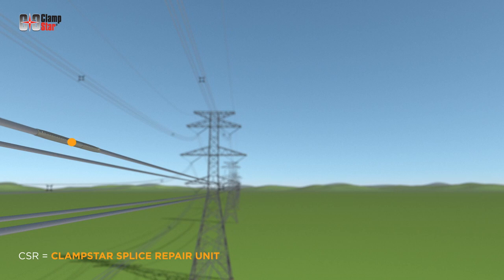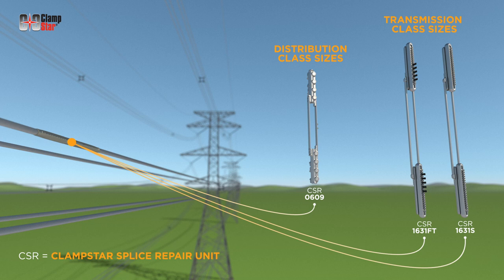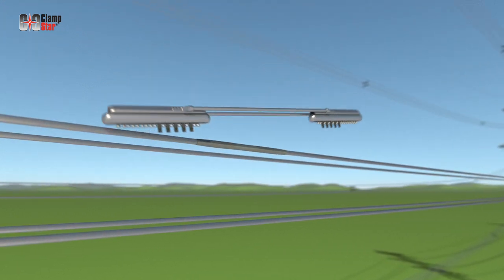ClamStar Splice Repair Units are available in distribution class sizes and transmission class sizes. All ClamStar Splice Units will restore the conductor connector system to full tension. This installation will be done using a transmission class full tension unit.